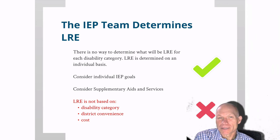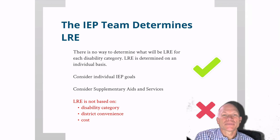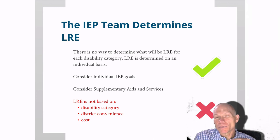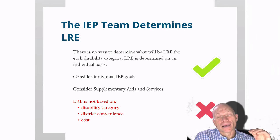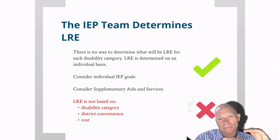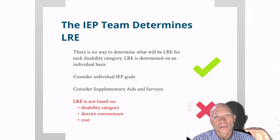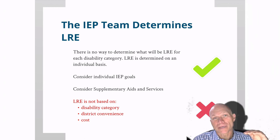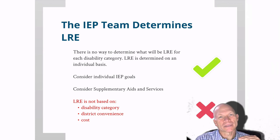One way to make this determination is by looking at each individual IEP goal for the student and determining where it can best be taught. Then, if we determine that a goal cannot be taught in a general ed classroom under current circumstances, we ask: what supplementary aids and services could we add to keep the child in that general ed classroom? Only past that point would we consider moving the child to a separate setting.